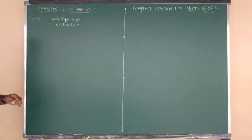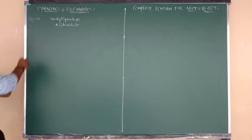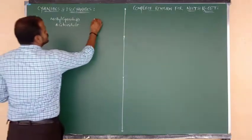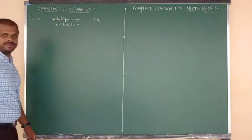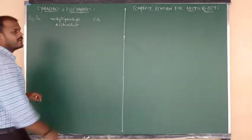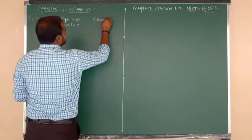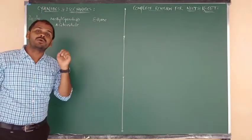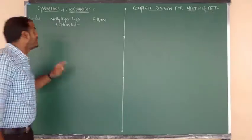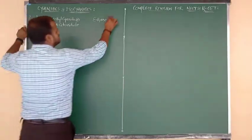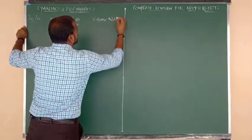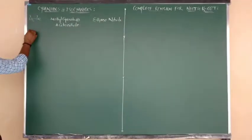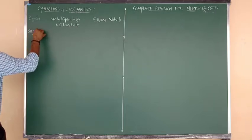What is its IUPAC name? The compound has carbon number one and carbon number two. The root word is 'eth' (two carbons, single bond), so the primary suffix is '-ane'. Therefore, the IUPAC name is ethane nitrile. So CH3CN can be written as methyl cyanide (common name) or ethanenitrile (IUPAC name).